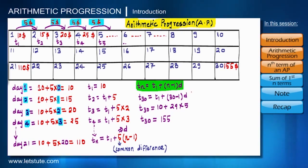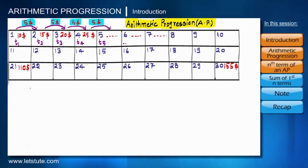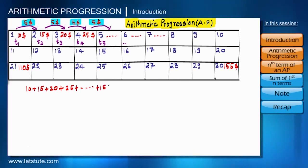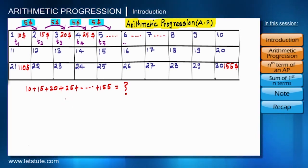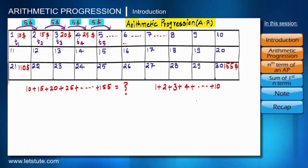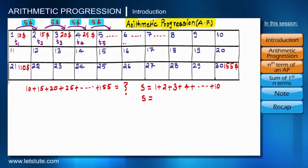Now let's go to the next step and try to find the total revenue from this project — that is, the summation of all 30 payments: 10 plus 15 plus 20 plus 25 plus ... up to 155. A similar question was once asked to a boy in school: what is the addition of the first 10 counting numbers? That boy answered very quickly. He wrote the expression as S equal to the summation of all 10 counting numbers, then wrote the same expression in reverse order, and added the two.